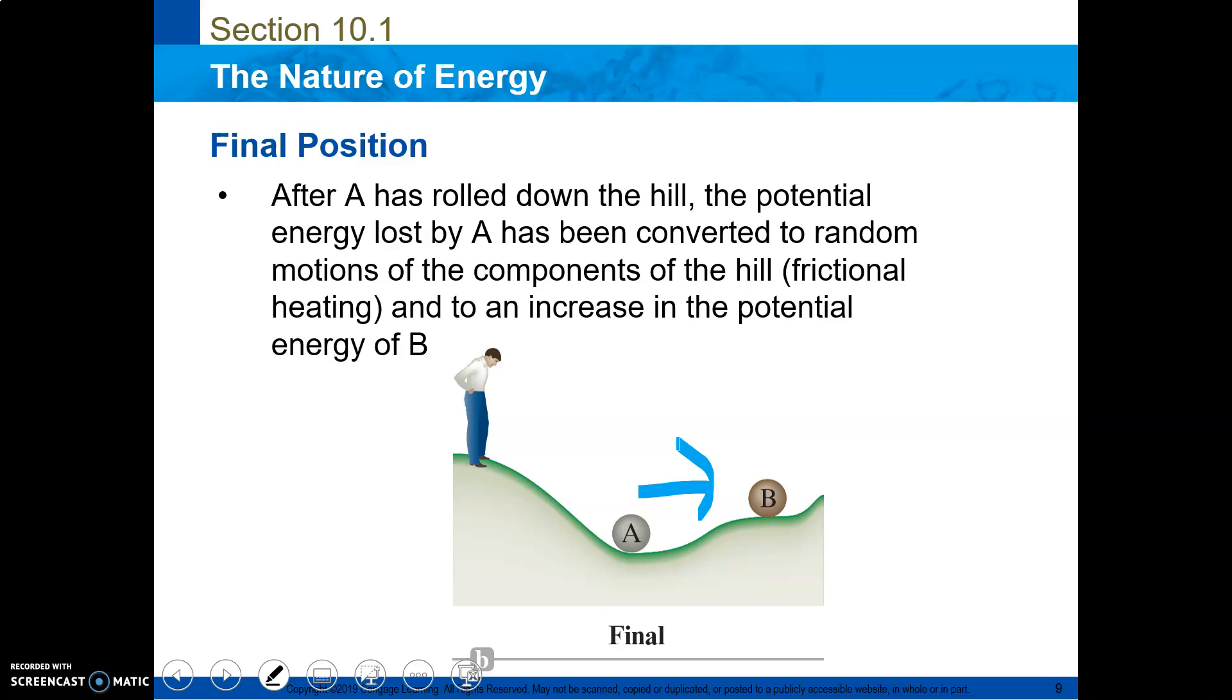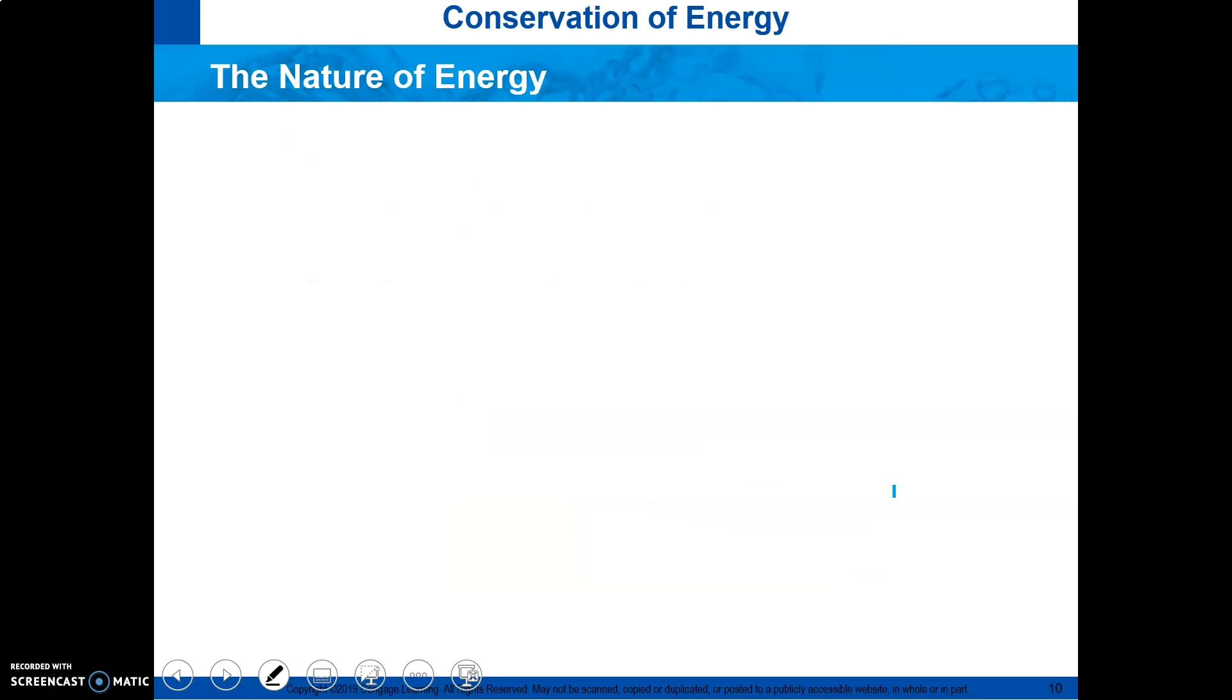But the main thing we're focusing on is the fact that A knocks B out of here. When it does that, if you look, B is now higher than it originally was. So B now has a greater H height, which means that it has greater potential energy. So there's been work done from A to B.